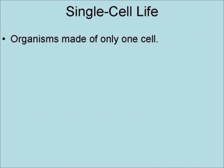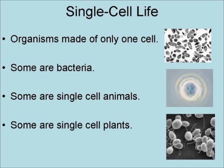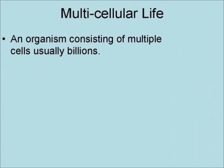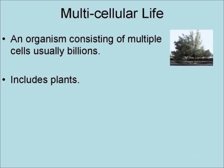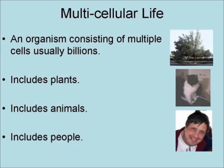Single-celled life consists of organisms made up of only one cell. Some are bacteria, some are single-cell animals, some are single-celled plants, such as blue-green algae. Multicellular life consists of organisms consisting of multiple cells, usually billions. They include plants, animals, and people.